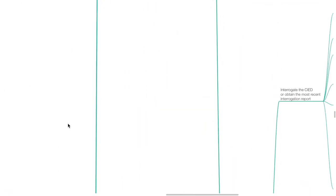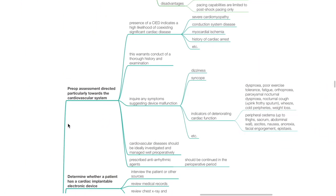Preoperative management — history: pre-op assessment is directed particularly towards the cardiovascular system. The presence of a CIED indicates a high likelihood of coexisting significant cardiac disease such as severe cardiomyopathy, conduction system disease, myocardial ischemia, and history of cardiac arrest, warranting a thorough history and examination. Inquire about any symptoms suggesting device malfunction such as dizziness and syncope, and indicators of deteriorating cardiac function such as dyspnea, poor exercise tolerance, fatigue, orthopnea, paroxysmal nocturnal dyspnea, nocturnal cough, wheeze, cold peripheries, weight loss, peripheral edema, ascites, nausea, anorexia, facial engorgement, and epistaxis.